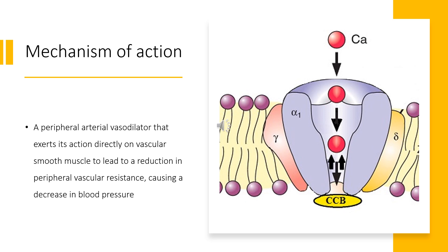Mechanism of Action. Felodipine decreases arterial smooth muscle contractility and subsequent vasoconstriction by inhibiting the influx of calcium ions through voltage-gated L-type calcium channels. It reversibly competes against nitrendipine and other DHP-CCBs for DHP binding sites in vascular smooth muscle and cultured rabbit atrial cells. Calcium ions entering the cell through these channels bind to calmodulin. Calcium-bound calmodulin then binds to and activates myosin light-chain kinase (MLCK). Activated MLCK catalyzes the phosphorylation of the regulatory light-chain subunit of myosin, a key step in muscle contraction. Signal amplification is achieved by calcium-induced calcium release from the sarcoplasmic reticulum through ryanodine receptors.